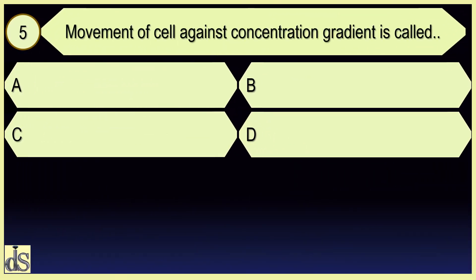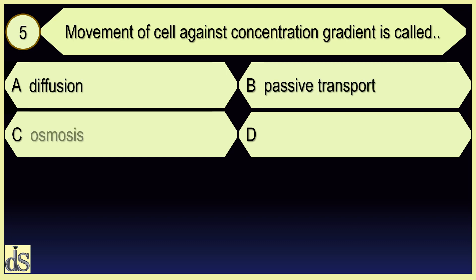Movement of a cell against concentration gradient is called active transport.